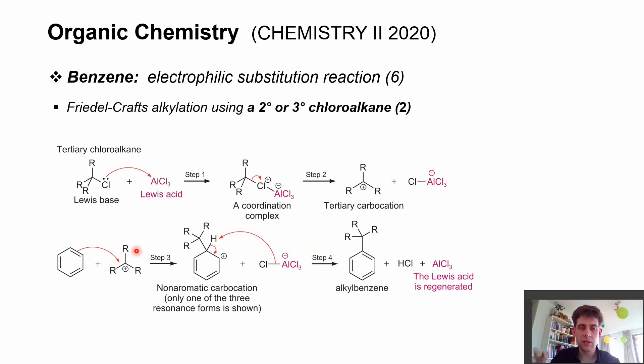In the end, this carbocation (without the Lewis acid still attached) gets attacked by the pi electron density from the benzene ring. We then get an alkylbenzene, but this time from a tertiary carbocation.